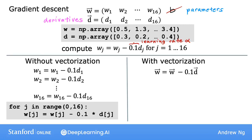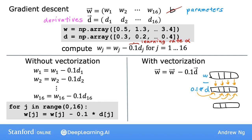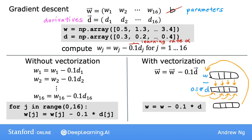In contrast, with vectorization, you can imagine the computer's parallel processing hardware like this: it takes all 16 values in the vector w and subtracts in parallel 0.1 times all 16 values in the vector d, and assigns all 16 calculations back to w, all at the same time and all in one step. In code, you can implement this as: w is assigned to w minus 0.1 times d. Behind the scenes, the computer takes these numpy arrays w and d and uses parallel processing hardware to carry out all 16 computations efficiently.